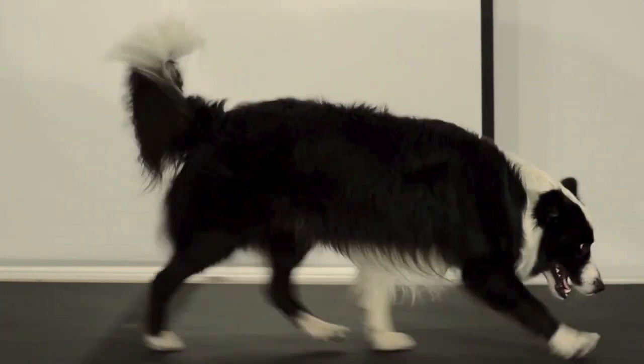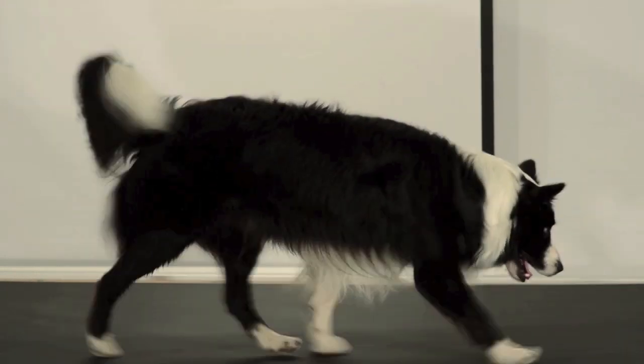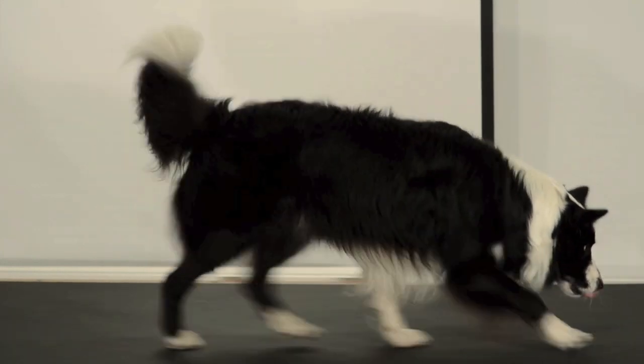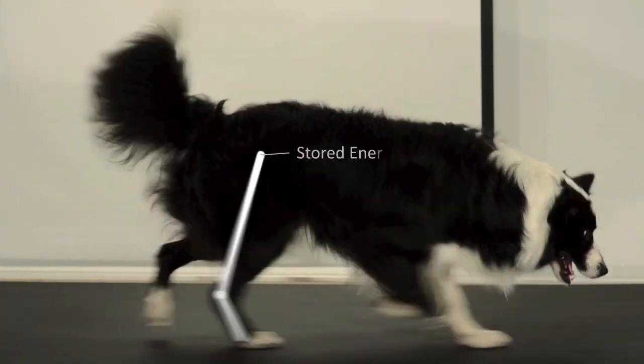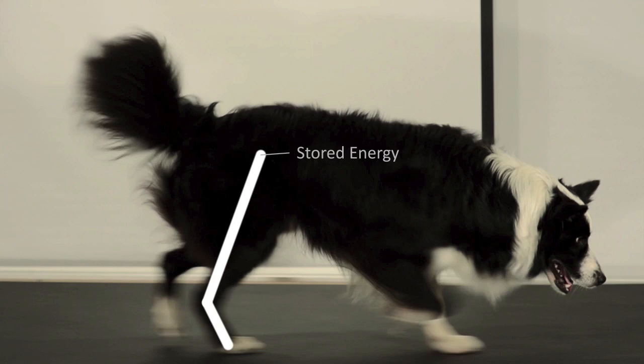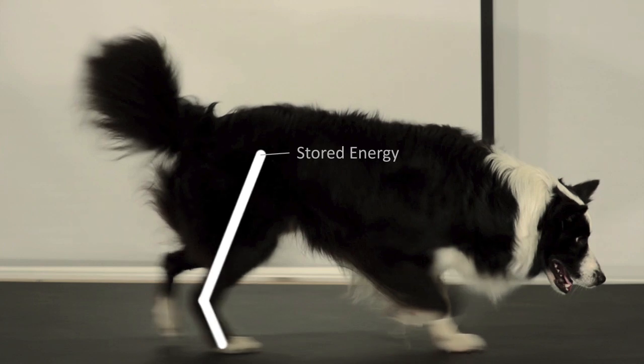This then allows the animal to interact in a compliant way with the environment and locomote very efficiently. While the leg is compressed, energy is stored in the muscles and released again before lift off.